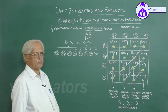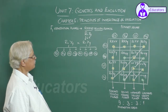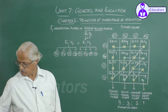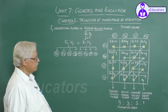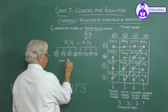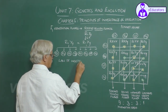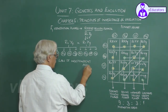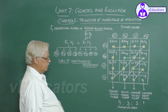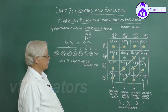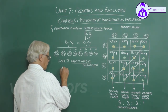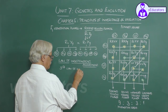9 is to 3 is to 3 is to 1. So this is the phenotypic ratio. After representing the results like this, Mendel was able to come to another very important conclusion, which came to be known as the law of independent assortment — Mendel's third law of inheritance.